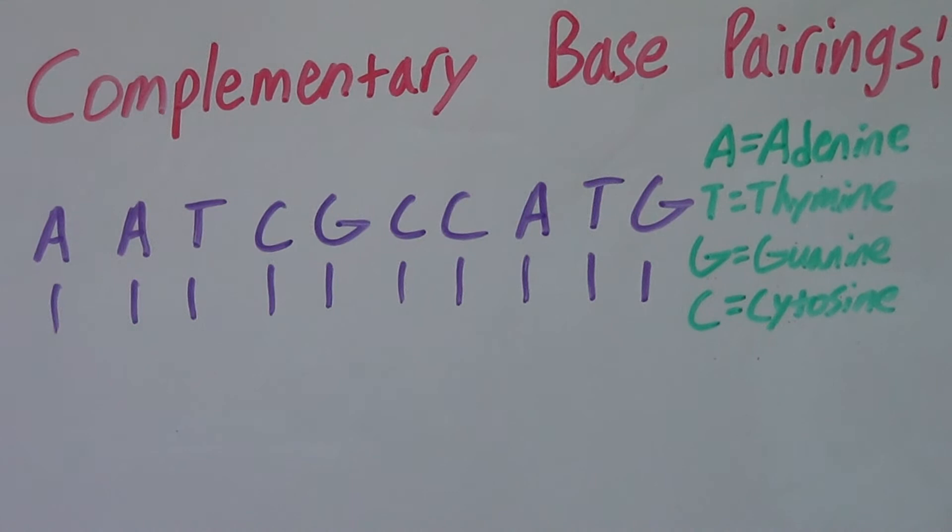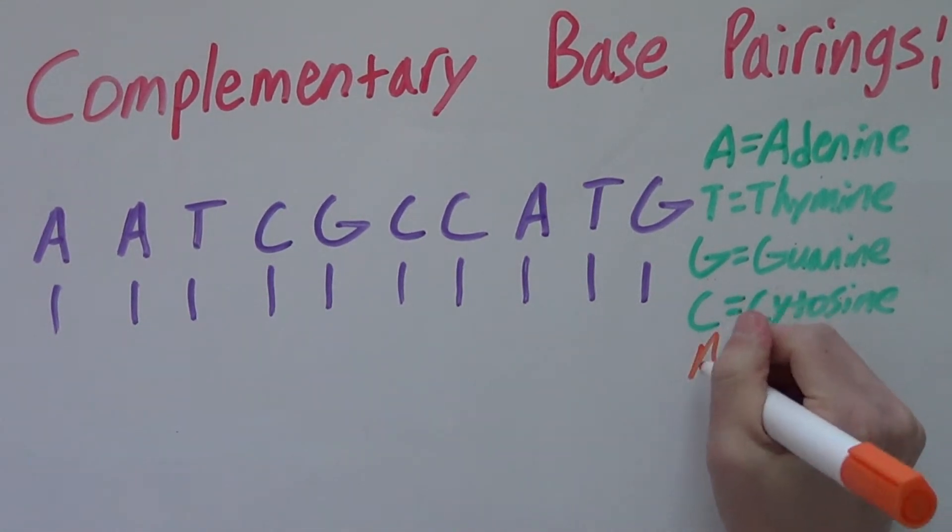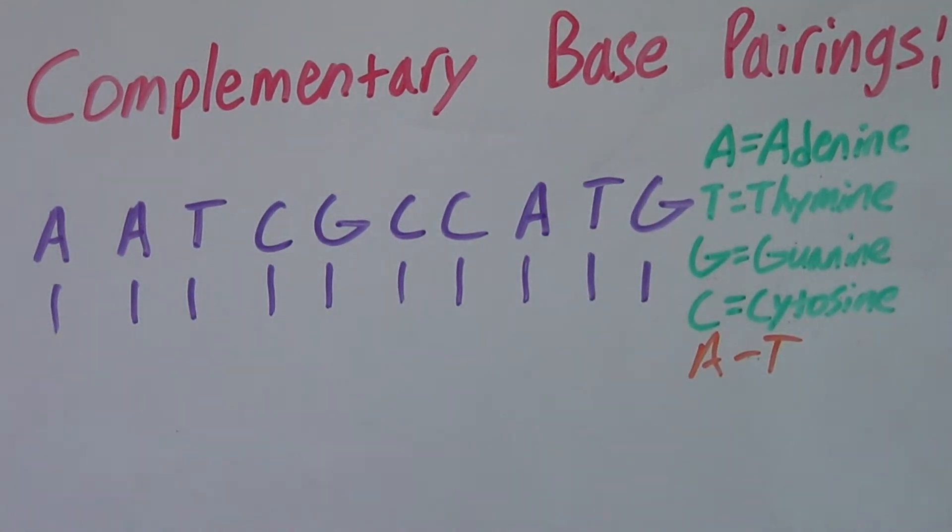A and T pair and then G and C pair together. So basically, all you have to do is look at our first side of DNA.